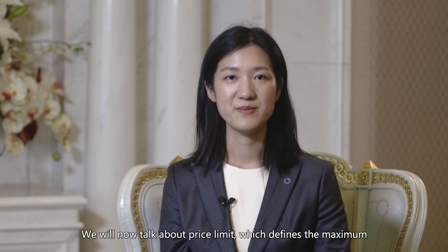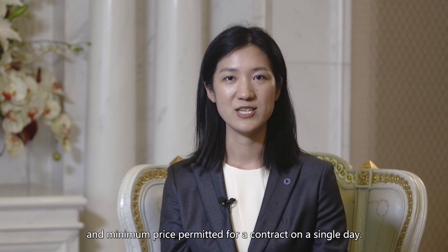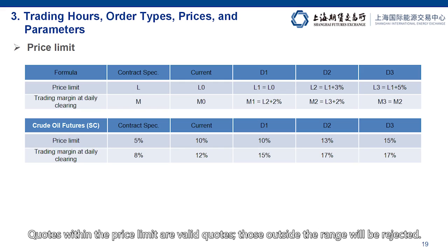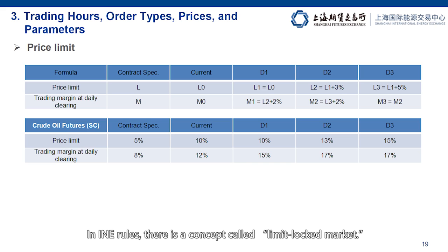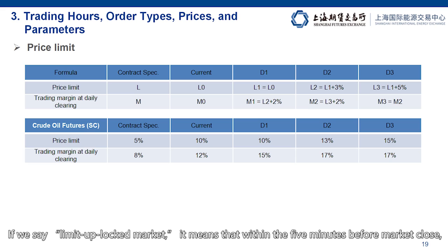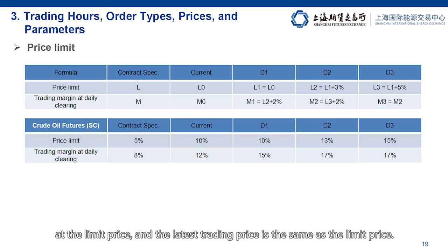We will now talk about price limit, which defines the maximum and minimum price permitted for a contract on a single day. Quotes within the price limit are valid; those outside the range will be rejected. In INE rules, there is a concept called a limit-locked market. If we say limit-up-locked market, it means that within the five minutes before market close, there are only bids but no asks at the limit price, or any asks are instantly executed at the limit price, and the latest trading price is the same as the limit price.